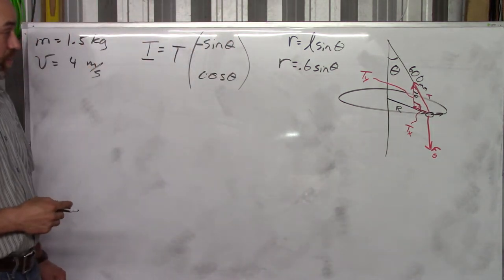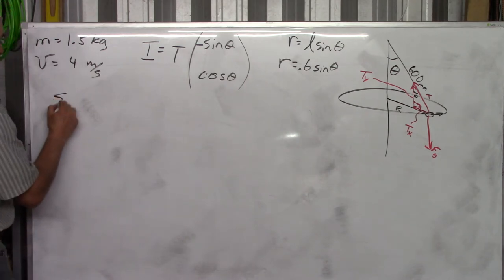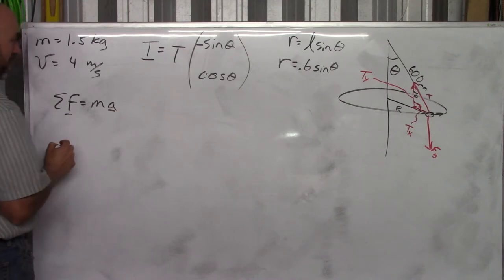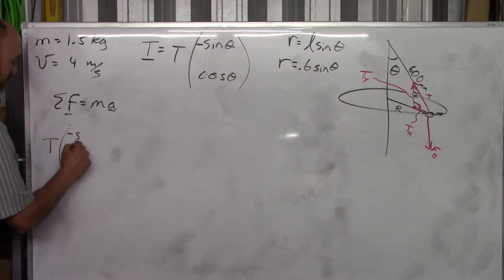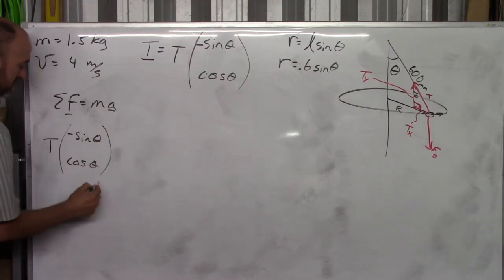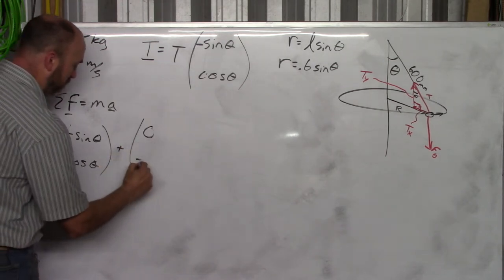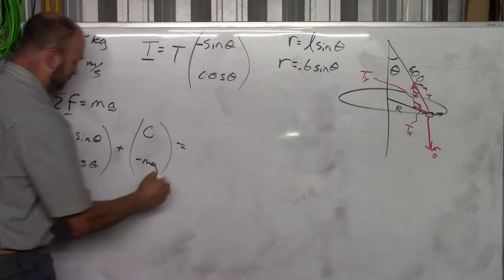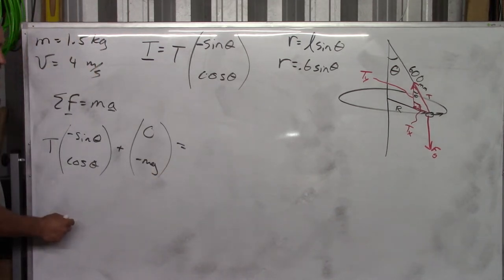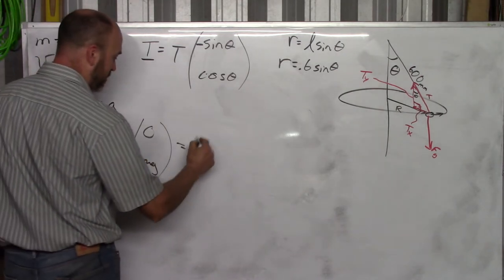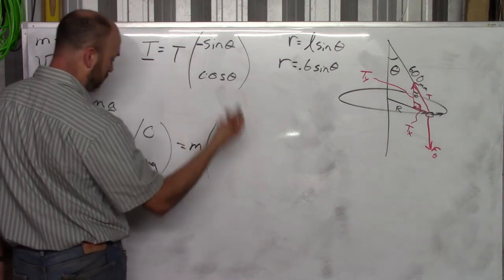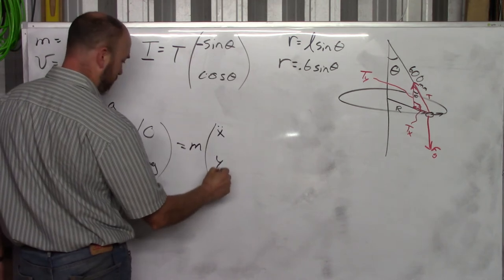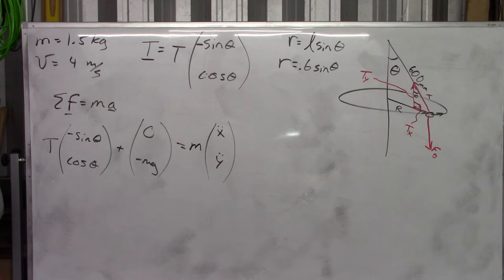Now, from there, we just do Newton's second law. So we say sum of the forces equals Ma. And we add up our forces. We've got tension. We've got gravity. So this is going to be T sin theta cos theta plus gravity, which is 0 minus mg equals, and there's your sum of the forces. See that? Tension, gravity. And then this is equal to Ma. So this is going to be some mass times A. And we can call this x double dot or phi double dot or row double dot. I'll call it x double dot and y double dot.